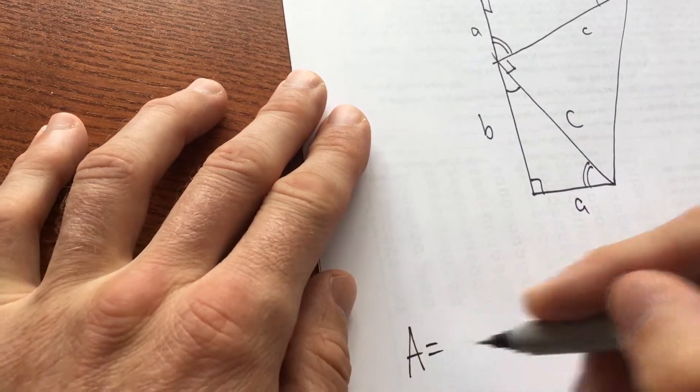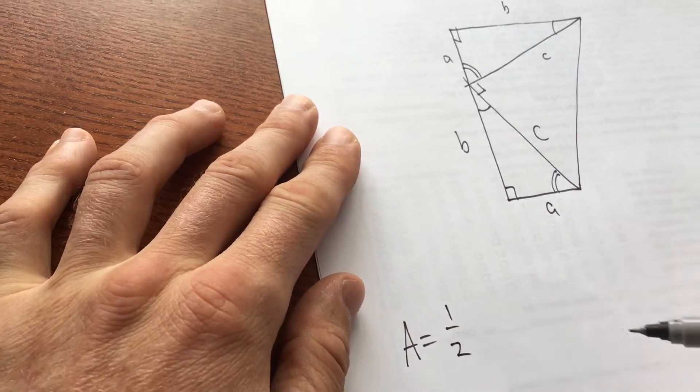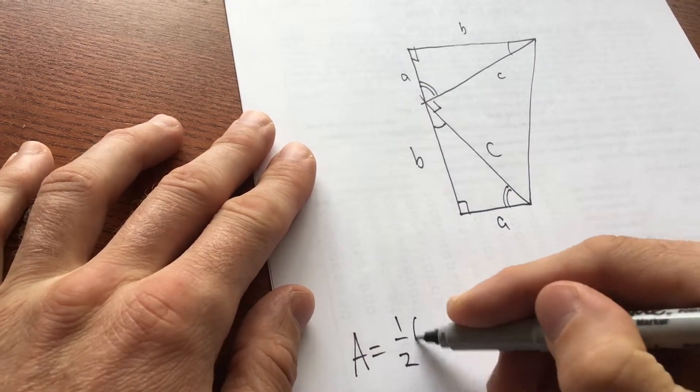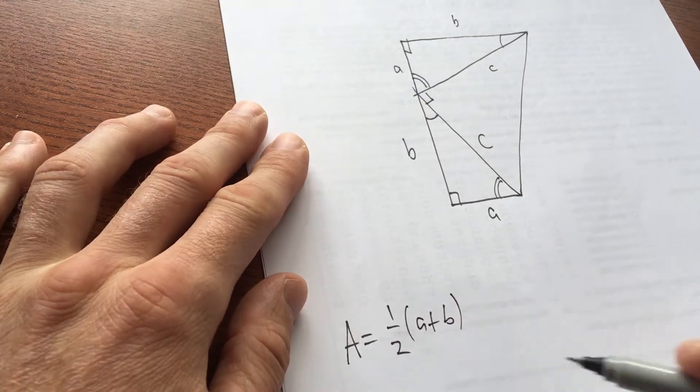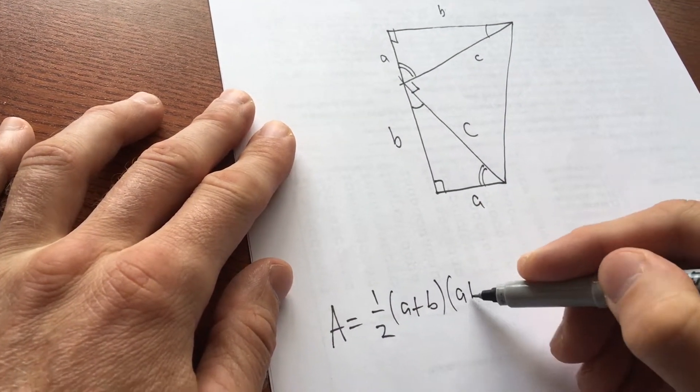So the area of the trapezoid is one half, is the average of the bases, which is a plus b. Half a plus b is the average of the bases times the height, a plus b.